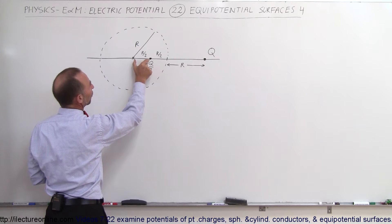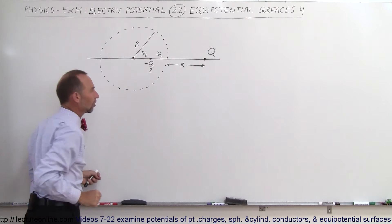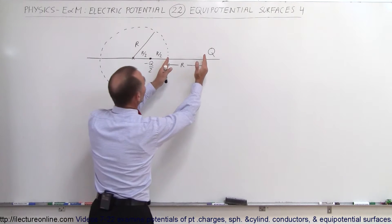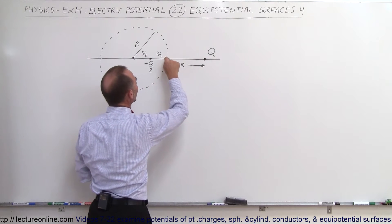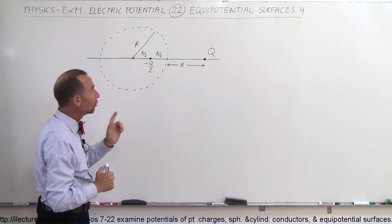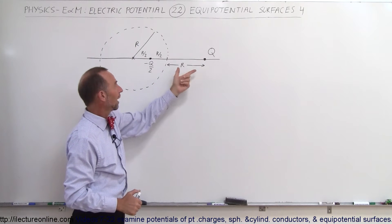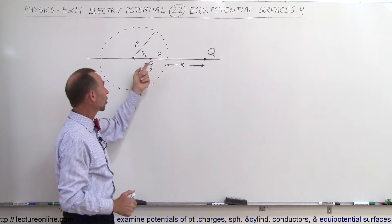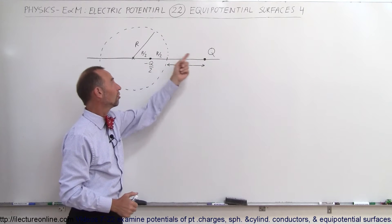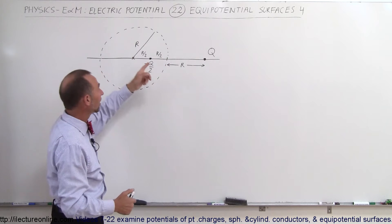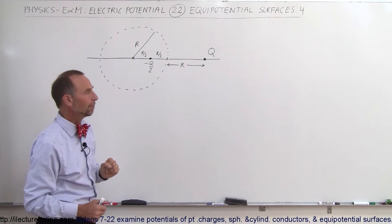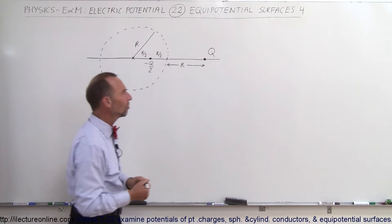That means there's another R/2 from that location to the center of the circle. So this point is twice as far from Q as it is from -Q/2, which means the potential at that location must be zero. Notice: twice the charge and twice as far away, half the charge and half the distance — the positive potential cancels the negative potential from the negative charge. And that should make sense.